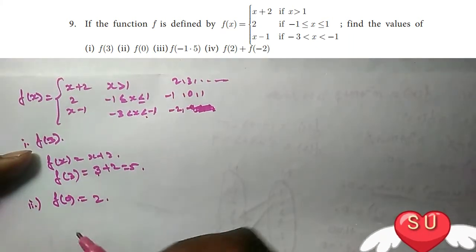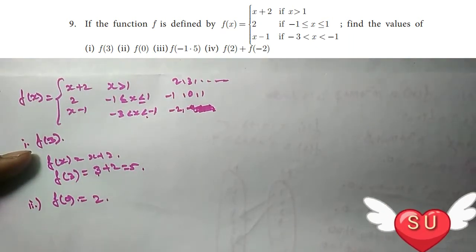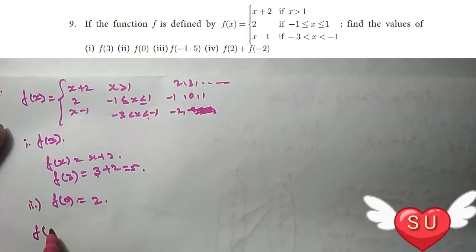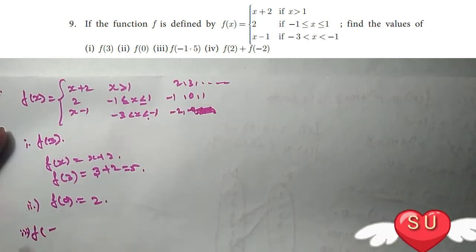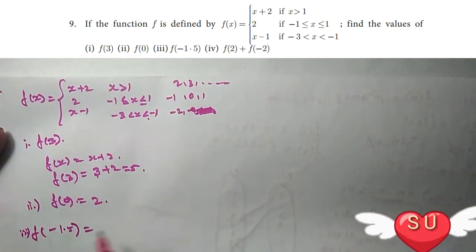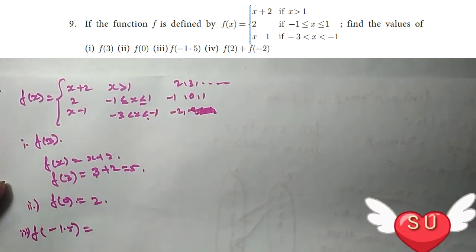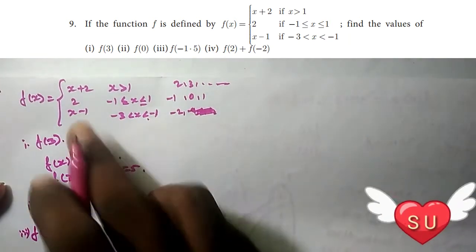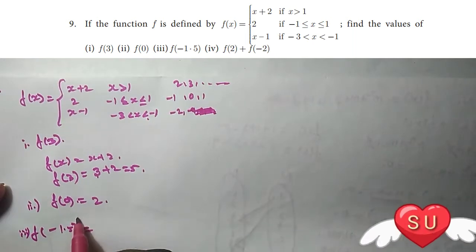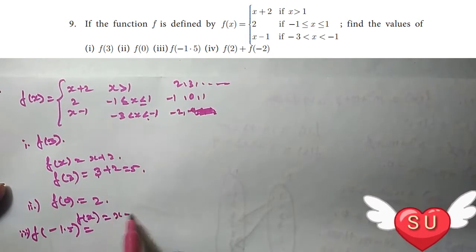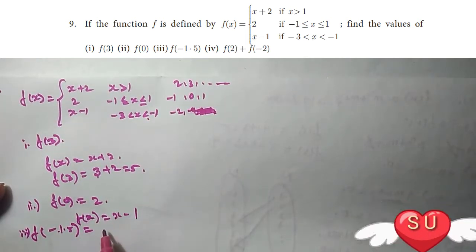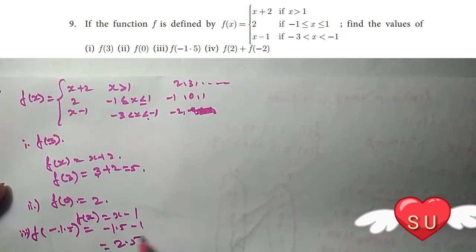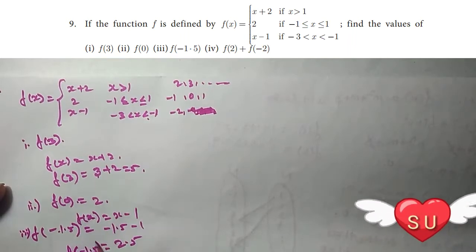Third question: find f(minus 1.5). Since minus 1.5 falls in the range minus 3 less than x less than minus 1, we use f(x) = x minus 1. So f(minus 1.5) = minus 1.5 minus 1 = minus 2.5.